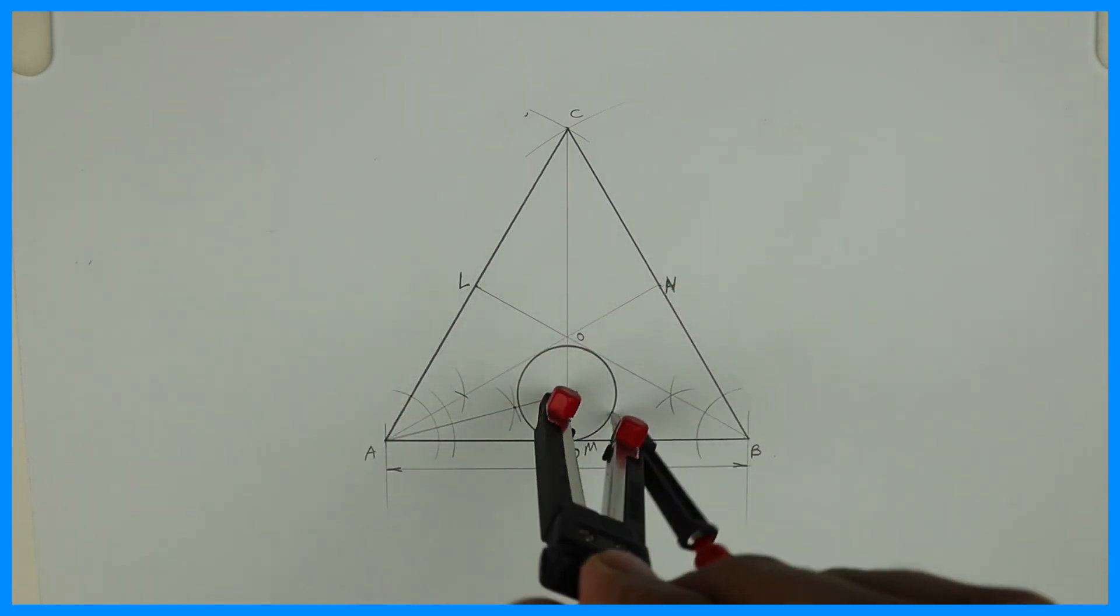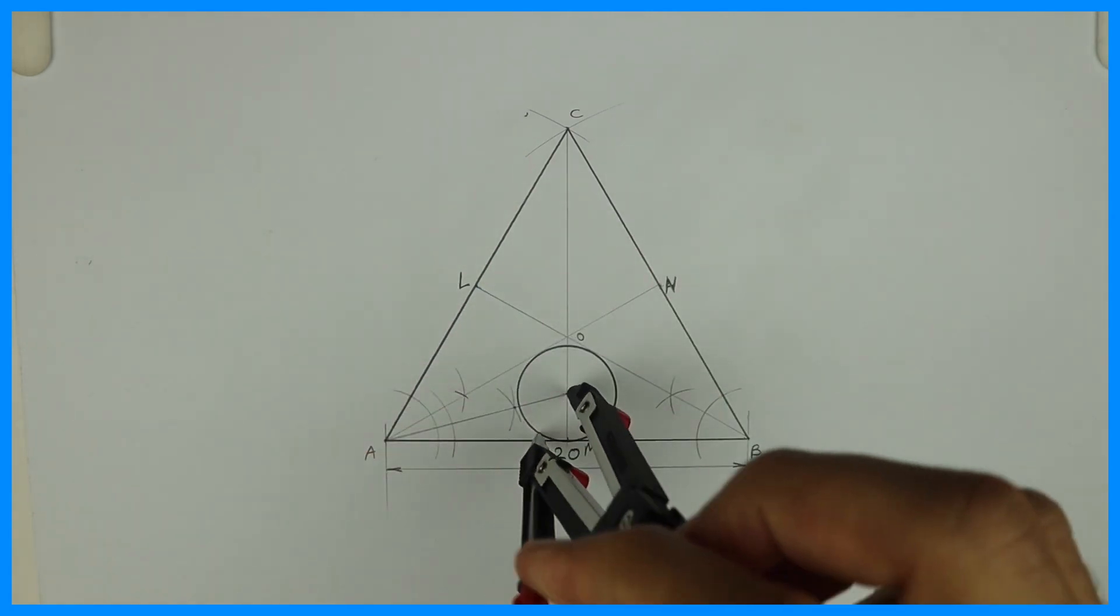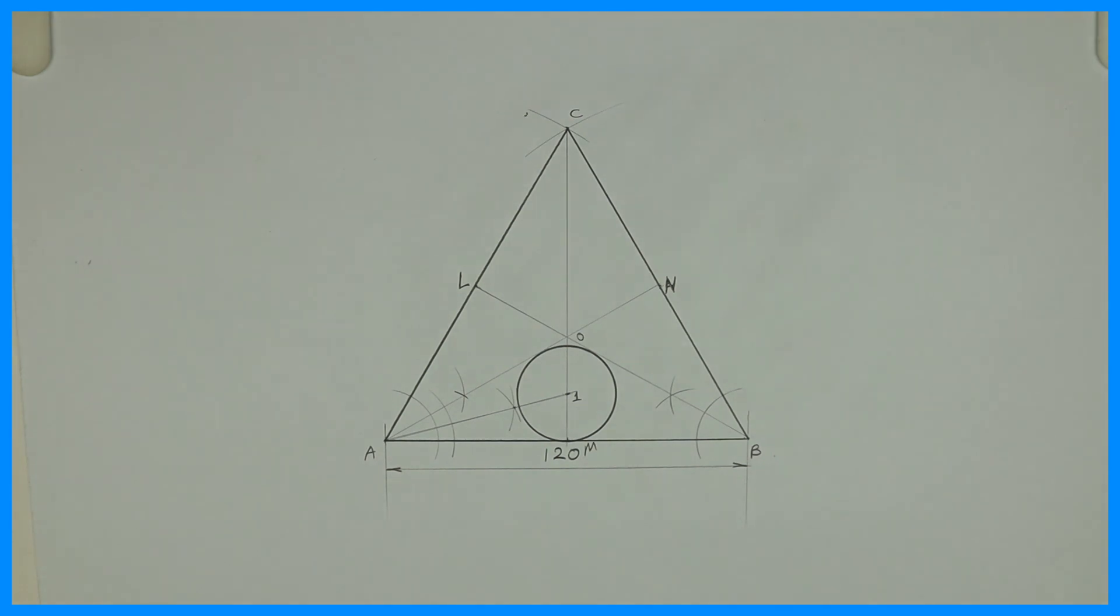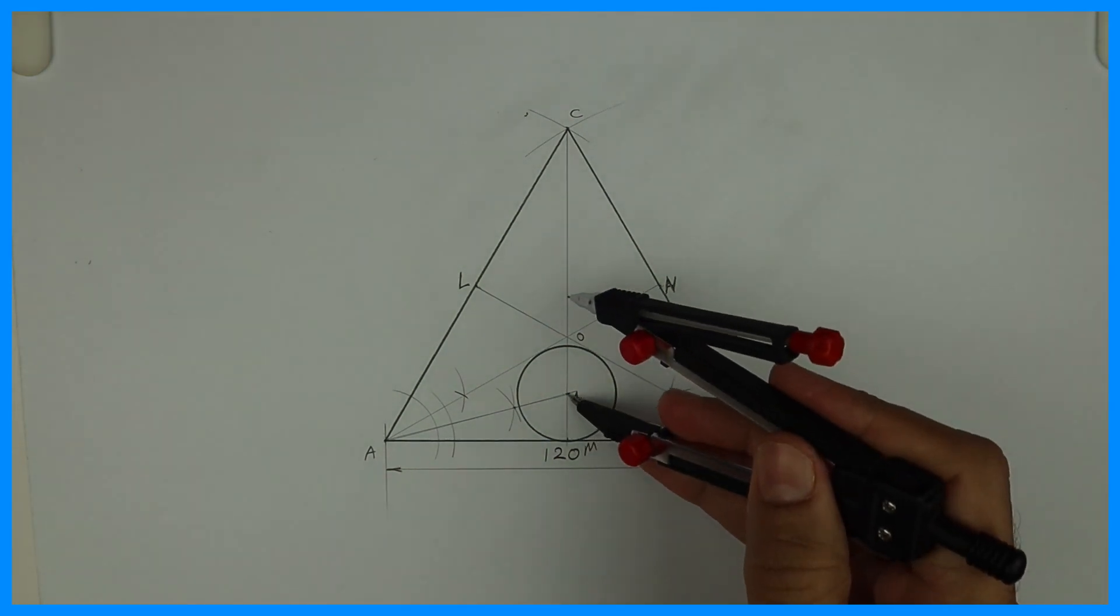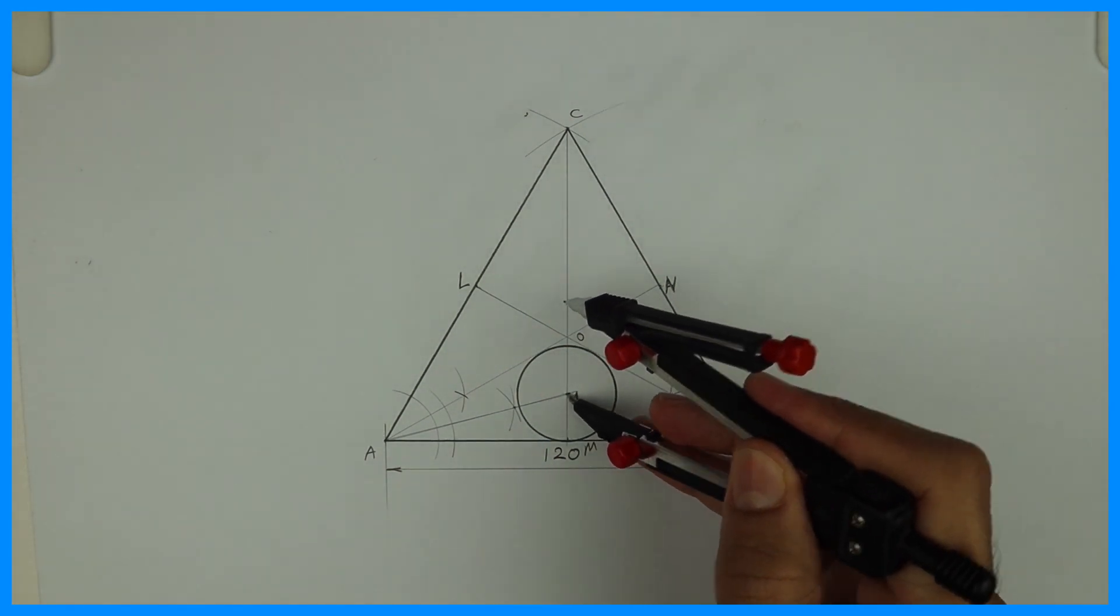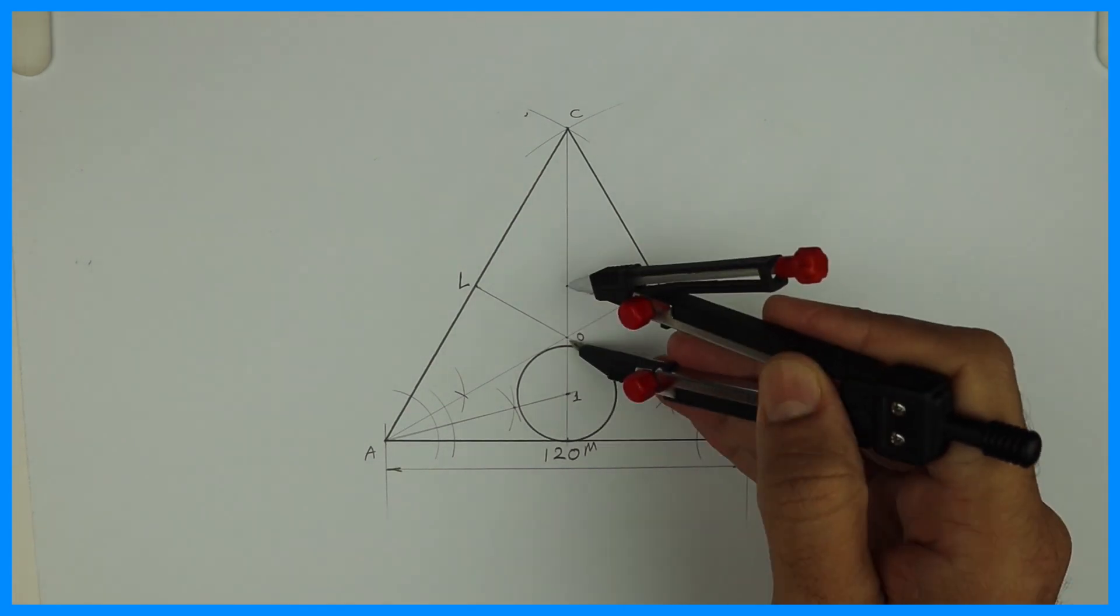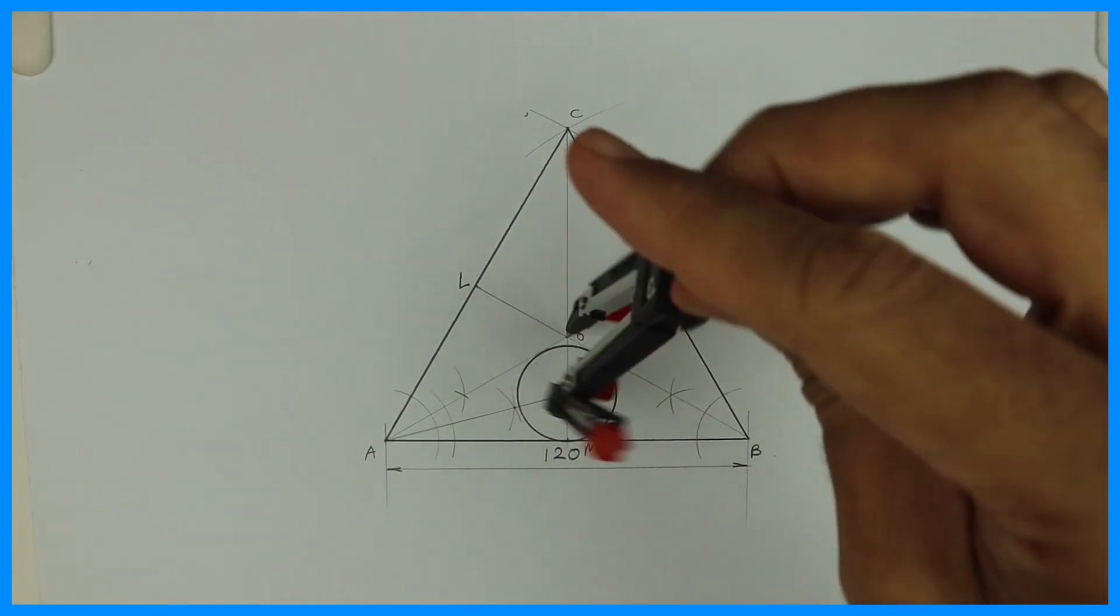You take 1 to M and draw a circle. Then take O to 1. And from O you can draw a circle.